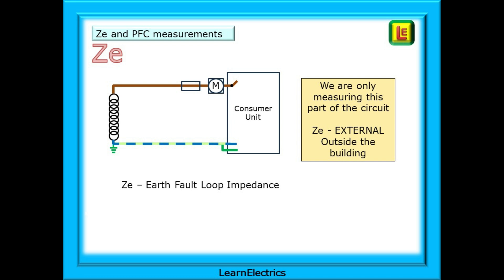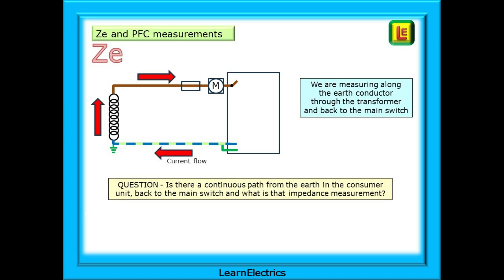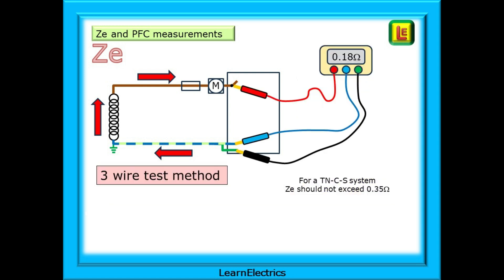We are only measuring this part of the circuit, ZE external to the installation, the outside of the building. We are measuring along the earth conductor through the supply transformer and back to the main switch. The question that we want answering asks is there a continuous path from the earth in the consumer unit all the way to the supply transformer and back to the main switch, and what is that impedance measurement? Why must the current path come back to the main switch you ask? Because without the current returning to the consumer unit and passing through the fuses, how are the fuses or circuit breakers ever going to blow and shut off the supply? The ZE test is a live test and you must show that you can work safely and isolate relevant parts of the circuit.